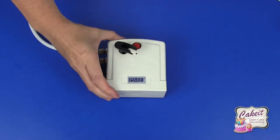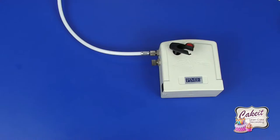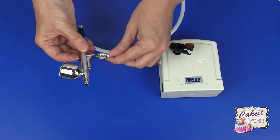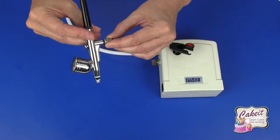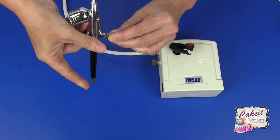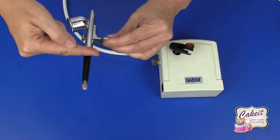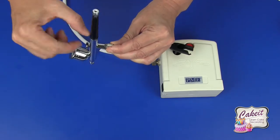And then we're able to attach the airbrush onto the other end of the hose, so just give that a little twist to begin. Once that's in position, again just twist until that's secure.